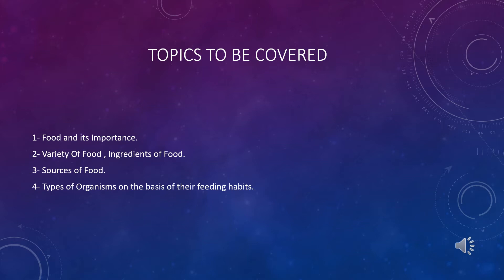The topics covered in this chapter are: point one — food and its importance, which includes the definition of food and its significance; point two — variety of food and ingredients of food, which covers variations in food and the substances required to make a particular food item; point three — sources of food, meaning from where food comes, whether plants or animals; and lastly — types of organisms based on their feeding habits, depending on their mode of nutrition.